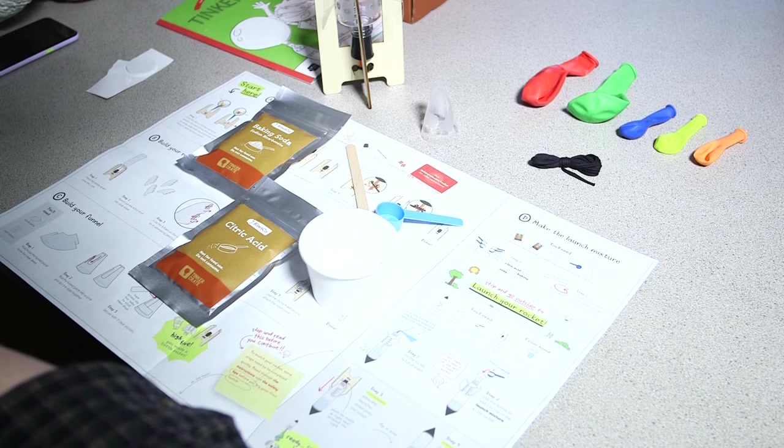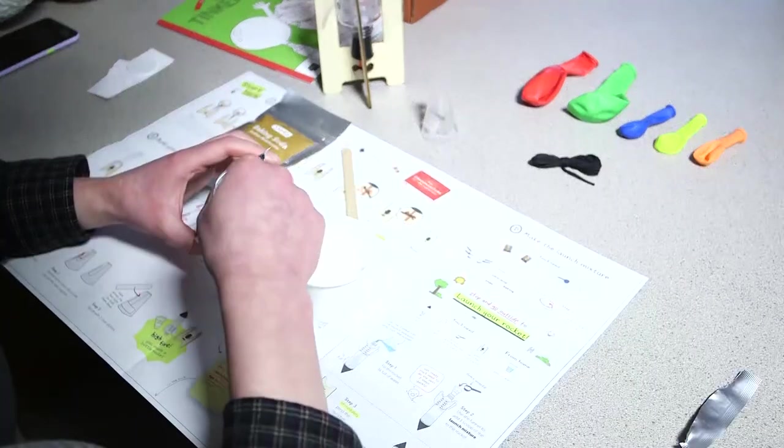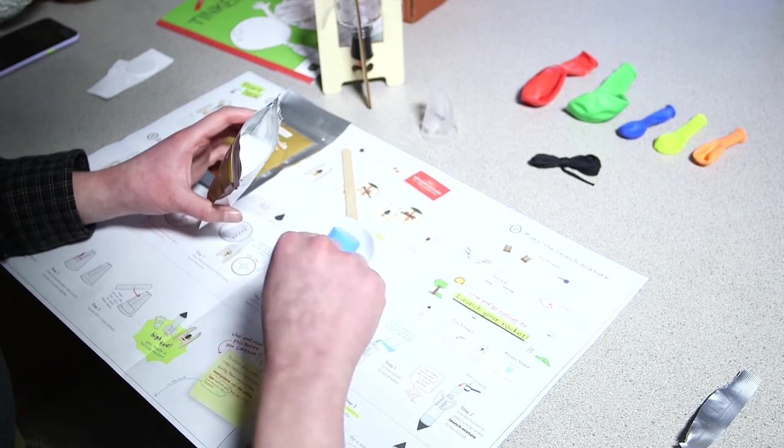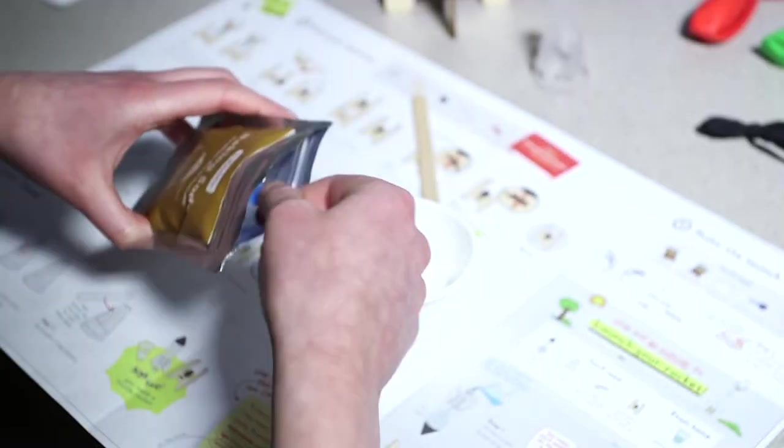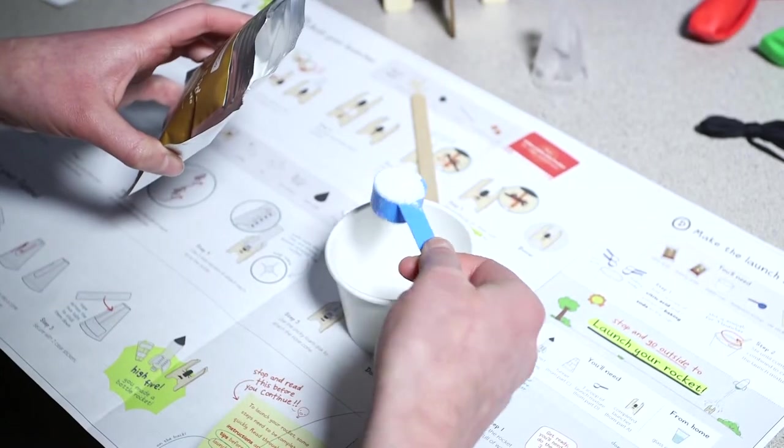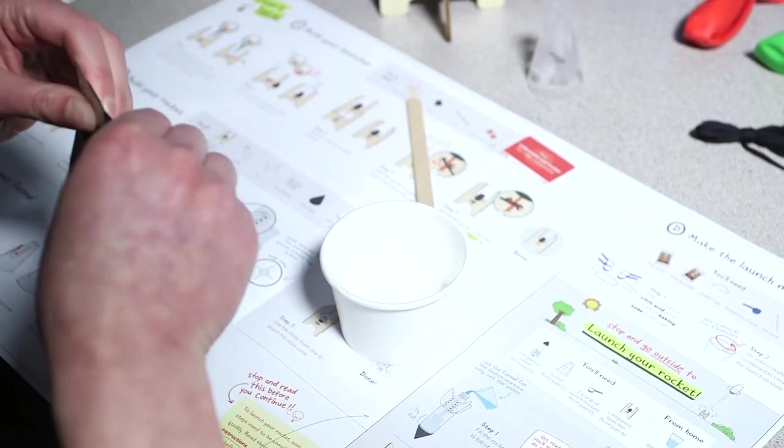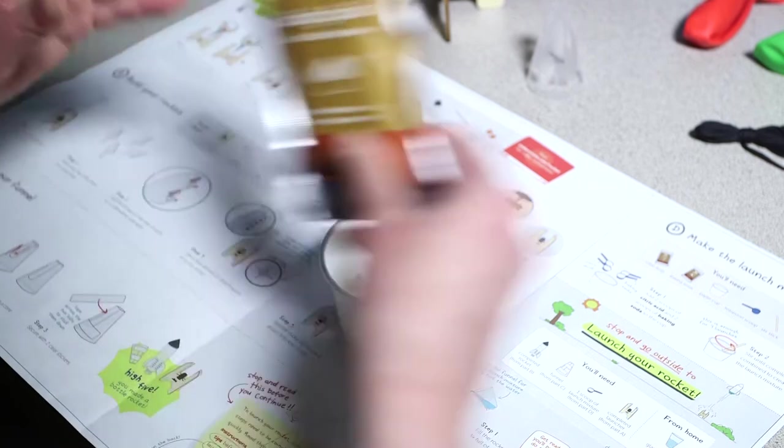Step number one: add two scoops of citric acid and two scoops of baking soda to your cup. That will be enough for four launches. But if you only wanted to do two launches, we could do half that. Or if you wanted to do one launch, you could do a quarter of that.